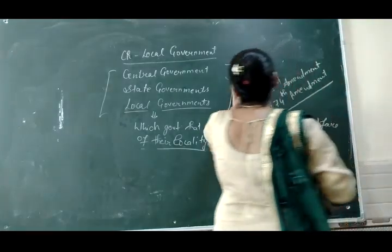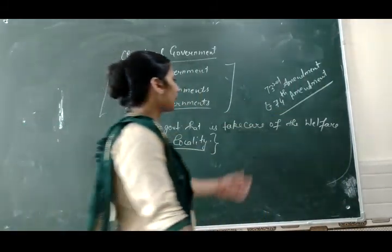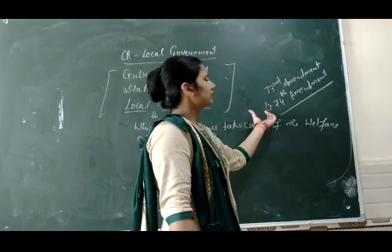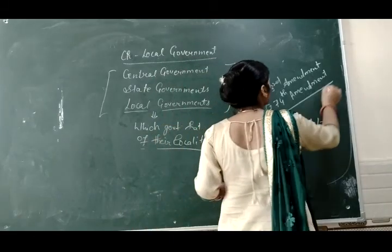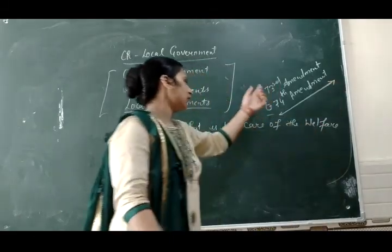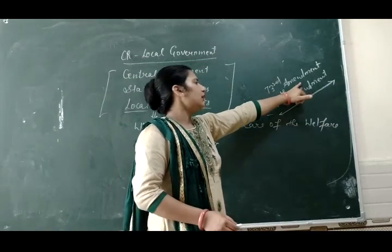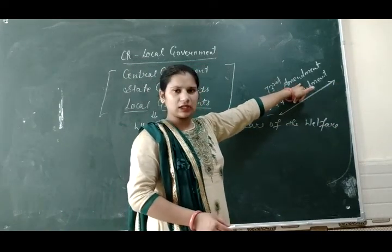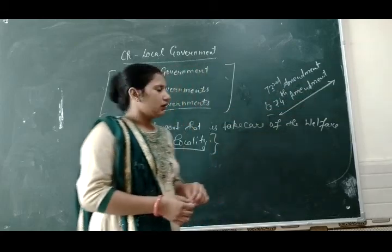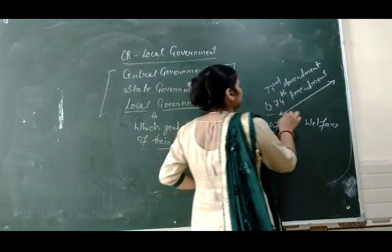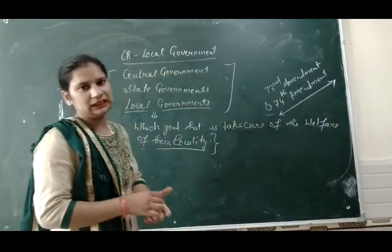In the 73rd Amendment, there are three tier systems in village or local area, and three tier systems in urban area. Under the 73rd Amendment, three tier systems apply to the local or village area, and the 74th Amendment applies three tier systems in urban area. Urban area means cities.